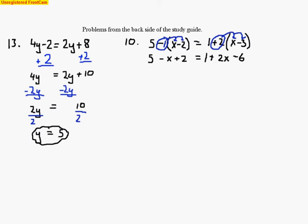And 2 times negative 3 makes negative 6. From this point we've eliminated the parentheses. Now we want to collect some like terms. Let's look at the like terms on the left-hand side. I see this positive 5 and a positive 2. When I collect like terms, I always look at the signs in front — never a sign behind. So this is a positive 5 and a positive 2.